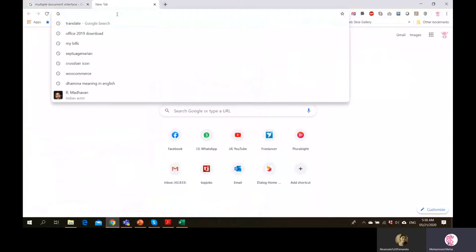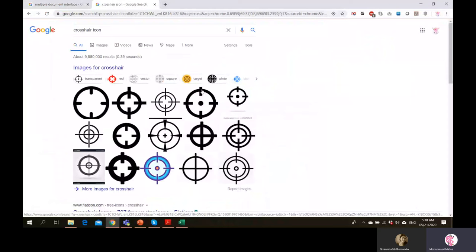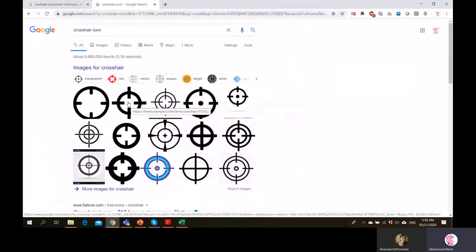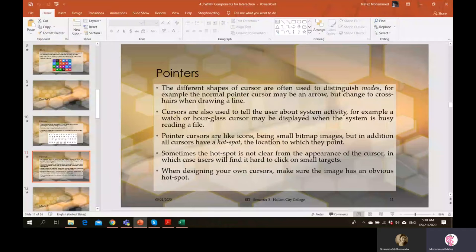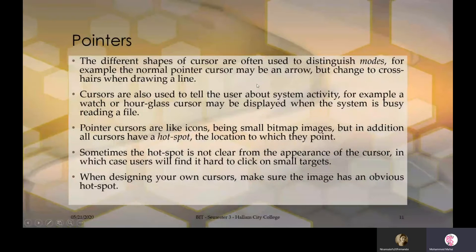When drawing a line, using a crosshair cursor means you don't get confused about where your mouse is pointing or where the starting and ending points are. Such considerations are important when designing pointers. When implementing a program, you can decide which cursor is most suitable for a given scenario. Cursors are also used to tell the user about system activity — for example, a watch, hourglass, or spinning circle cursor indicates the system is busy.